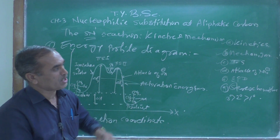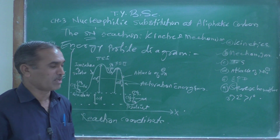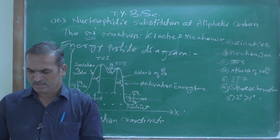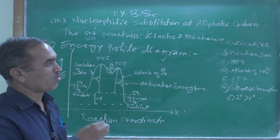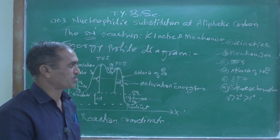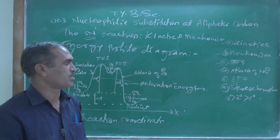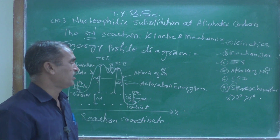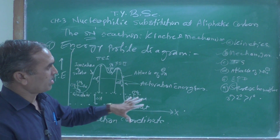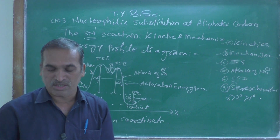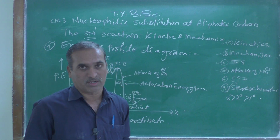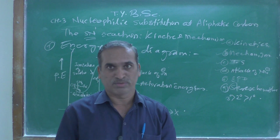Next we will look at the stereochemistry, similar to what we have seen for the SN1 reaction. What type of stereochemistry is involved? Racemization means equal chances of retention as well as inversion. That type of mixture is called a racemic mixture, and racemic mixtures are optically inactive in nature. Let us stop today here. Tomorrow we will see the stereochemistry for the SN1 reaction in more detail. Thank you and have a nice day.